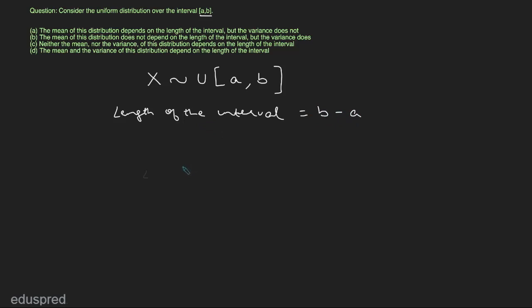There could be two scenarios. The first scenario is where you know the direct formulas for the mean and variance of the uniform distribution. The second scenario is when you do not know these formulas and have to figure them out in the exam hall. First, let's discuss the scenario in which you know the formulas.